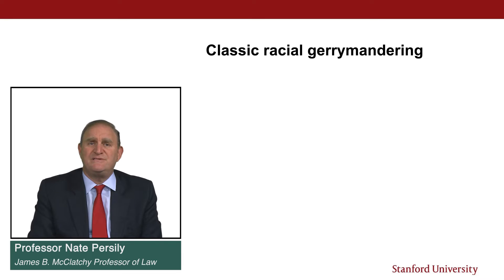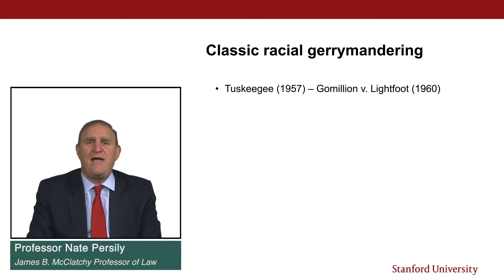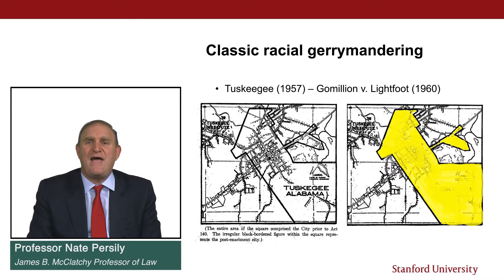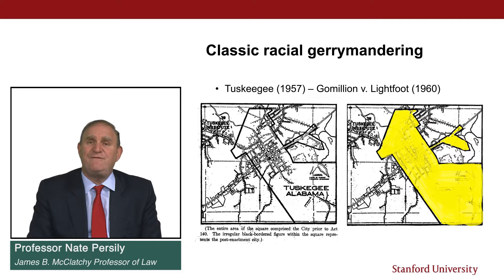In that case, the city boundaries of Tuskegee were redrawn in order to excise virtually all of the African-Americans from the city. You can see the square shape of Tuskegee before the gerrymander and then the 28-sided uncouth figure, as it was described in the case itself, that it became when the city was redrawn to take out almost all the African-Americans. The court ruled this unconstitutional, even with Justice Frankfurter writing.